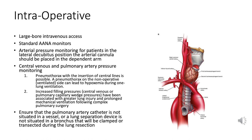Elevated central venous or pulmonary capillary wedge pressures can indicate fluid overload or cardiac issues and have been linked to higher chances of lung injury and extended time on mechanical ventilation post-surgery. When a lung resection is planned, it is crucial to ensure that any catheters or devices are not located in a vessel or bronchus that will be clamped or cut during the procedure.